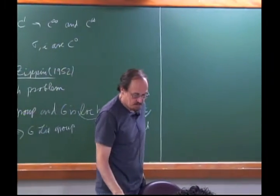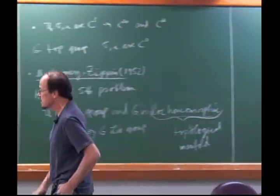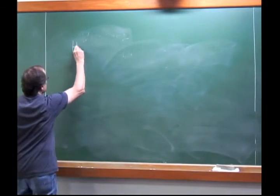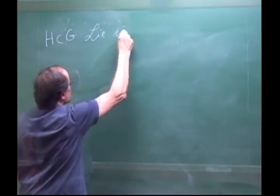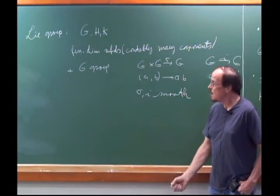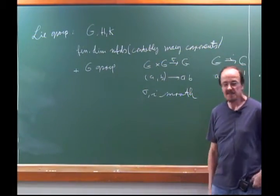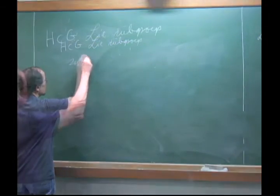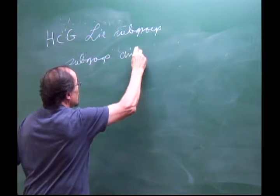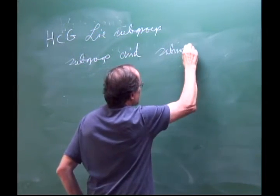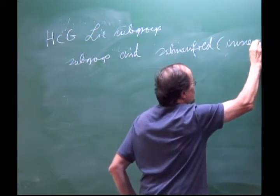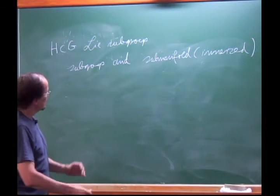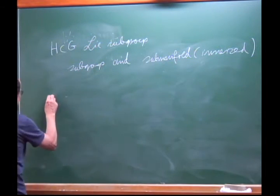Next important concept: what's a Lie subgroup? It's clear what a subgroup is in the group sense. A Lie subgroup is a subgroup in the group sense that is also a submanifold. There are somewhat subtle issues: the submanifold is only immersed, it doesn't have to be embedded — there are good reasons for that. And here's another amazing theorem: if G is a Lie group and H ⊆ G is a subgroup which is closed, then H is a Lie subgroup.